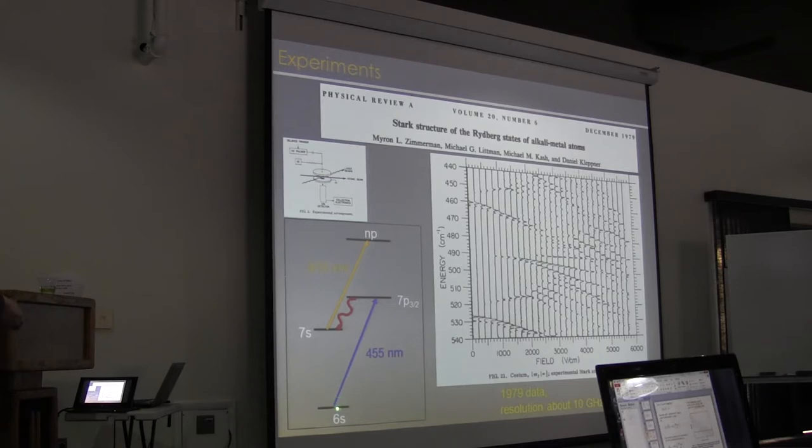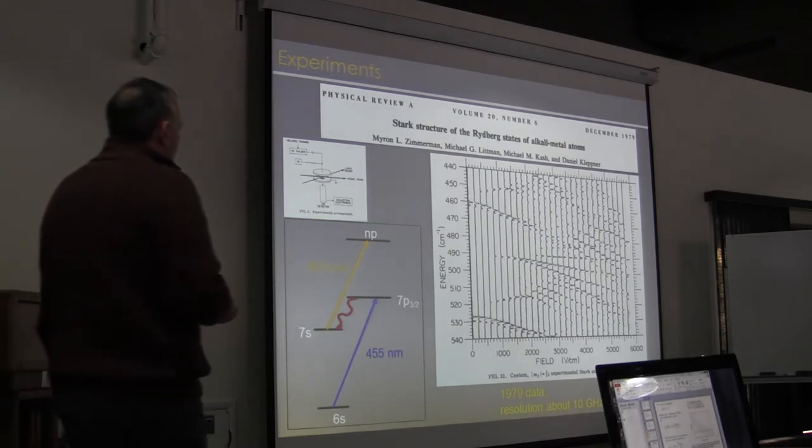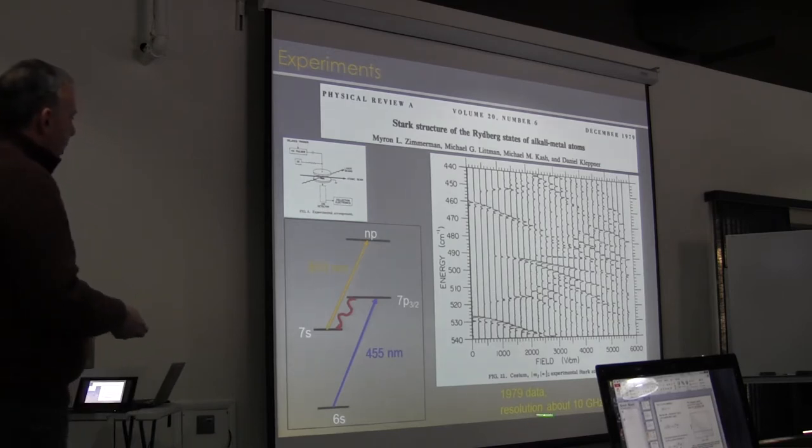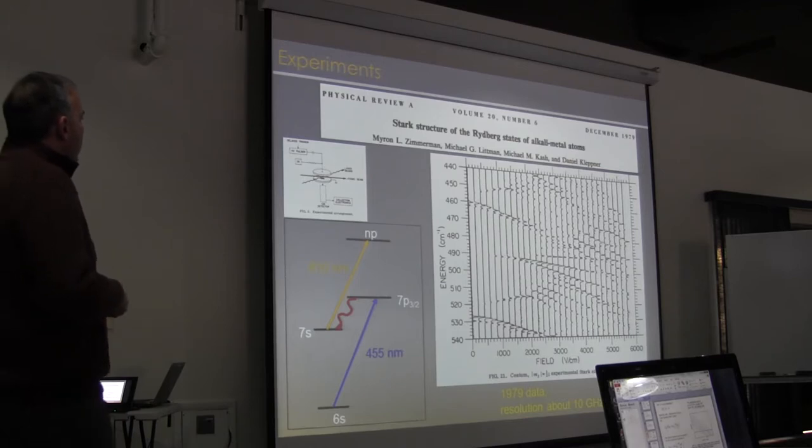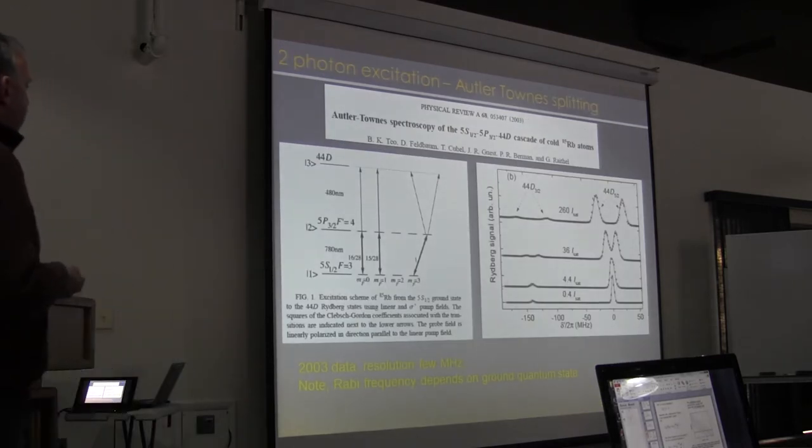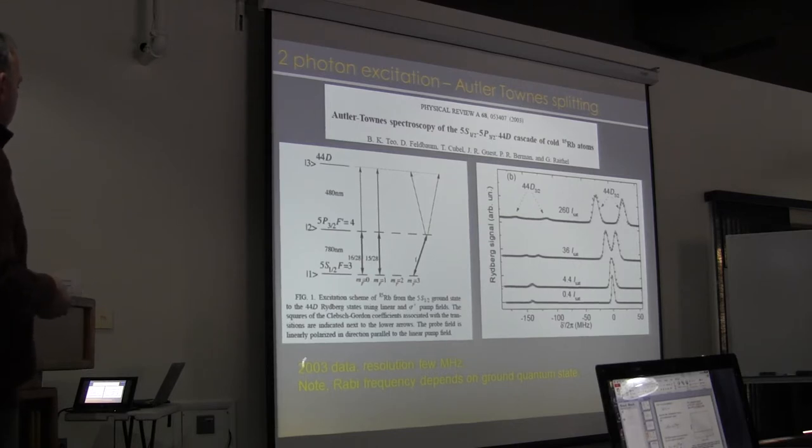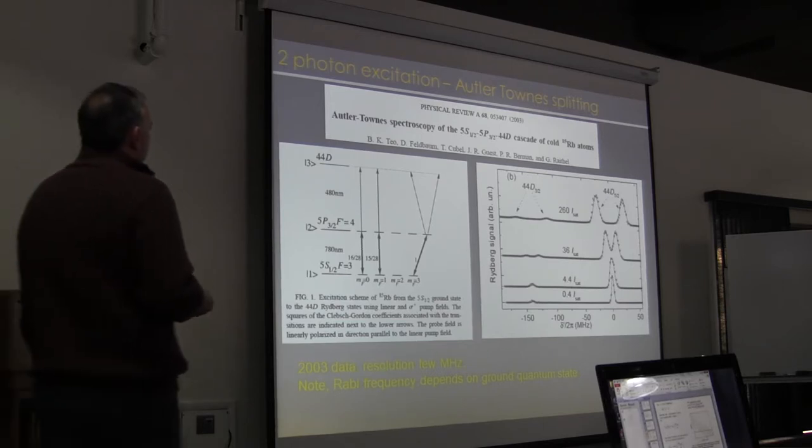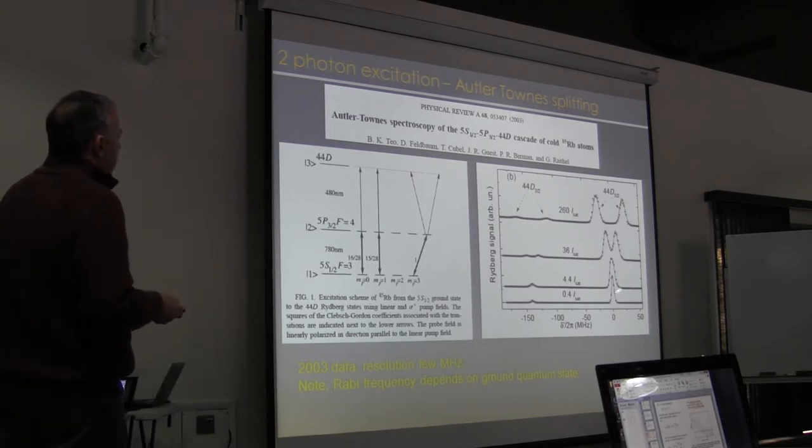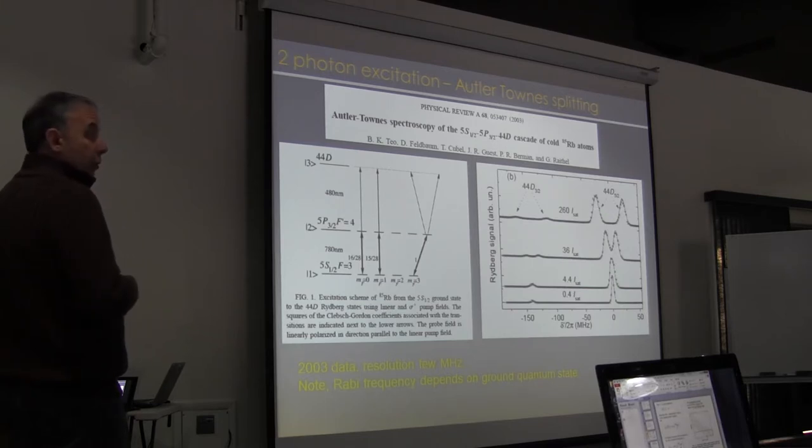Very well-known work from the Kleppner group, studying the Stark structure of Rydberg states. This was three-photon excitation, two driving photons, but an intermediate decay. So they went from 6s to 7p when looking at cesium, and then spontaneous decay, and then absorption of a 10 nanometer photon to a P level. And here you see late 70s data, resolution about 10 gigahertz on these Stark scans. High resolution two-photon excitation we see here from the Raithel group from about 10 years ago, with now about just a couple of megahertz resolution. This was the study of Autler-Townes splitting of the two-photon excitation. So you see, as you increase the intensity of one of the driving fields, you see the splitting of the excitation into a doublet, and so this lets you quantitatively determine your Rabi frequencies.